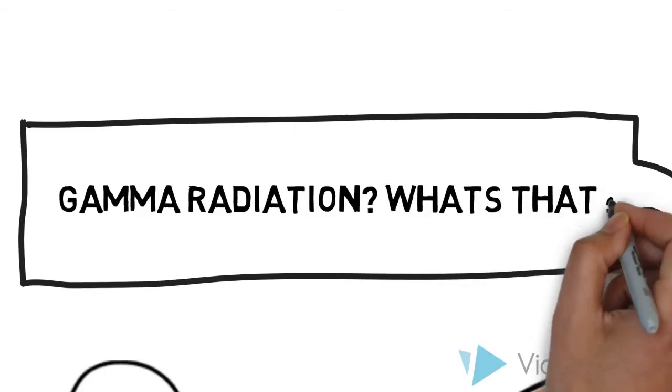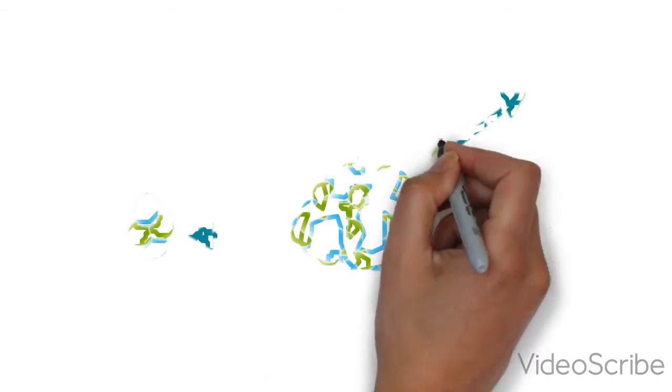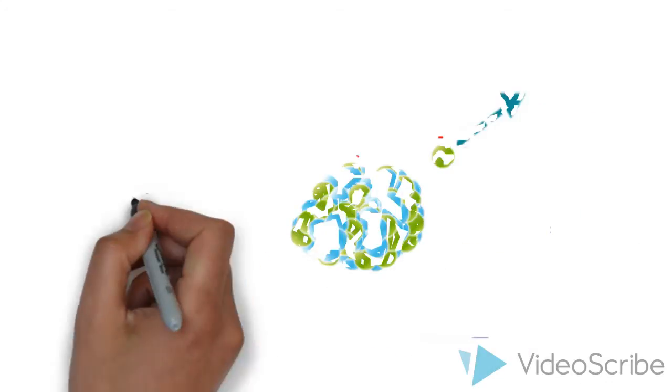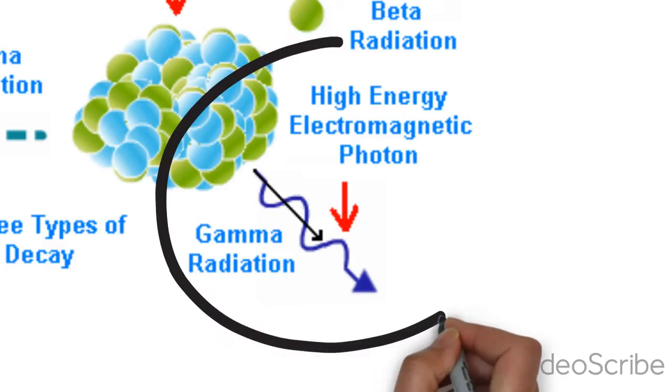Gamma radiation? What's that? Gamma radiation, or gamma rays, are emitted from my nucleus when I begin to decay. They are the most energetic wave in the electromagnetic spectrum and travel at the speed of light. Gamma radiation is the strongest and most penetrating form of radiation.